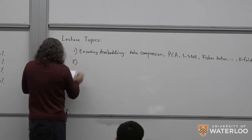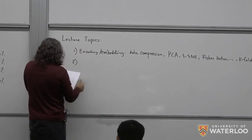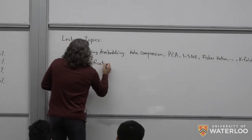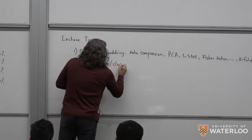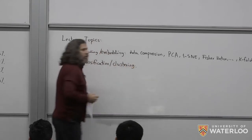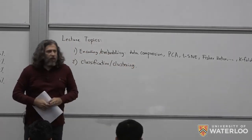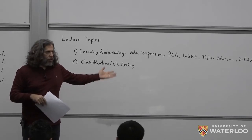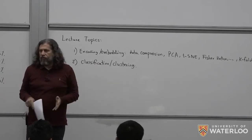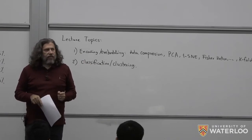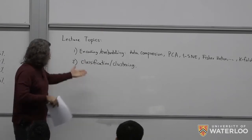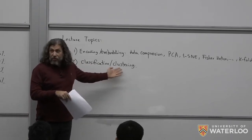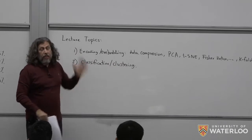The second class of topics we will cover is classification and clustering. It's not an exaggeration to say that 95% of things you hear about AI are about classification and clustering. This is the big bulk of tasks that AI technologies are doing, and they are really good at it — specifically at classification — provided there is enough data, the data behaves, and you have enough computational power.